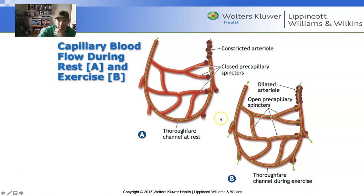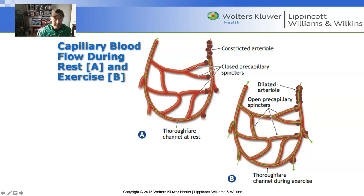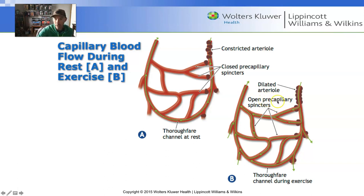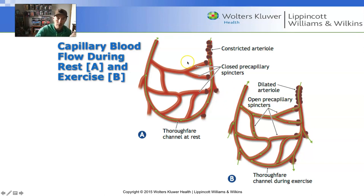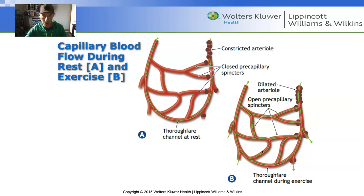Just as arterioles can divert blood flow, capillaries have the capacity to do that as well. At rest, some of our capillary network is closed off because the muscle is not active and doesn't need as much O2-rich blood. These closures are controlled by pre-capillary sphincters, which act like doors. At rest, we don't utilize the full capillary bed, but during exercise, all pre-capillary sphincters open up, allowing maximum oxygen extraction from blood into the active muscle.